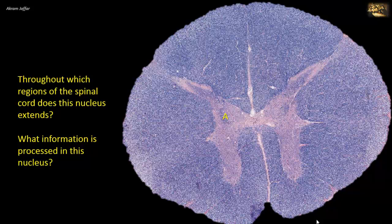Throughout which regions of the spinal cord does this nucleus extend, and what information is processed there? This nucleus is found at the base of the dorsal horn. Note that this is a section of a thoracic segment, as indicated by the presence of a lateral horn or intermediolateral cell column and a narrow anterior horn containing only a medial group of anterior horn cells. The nucleus is the nucleus dorsalis, also known as Clark's column, found throughout the thoracic and upper lumbar regions of the cord.